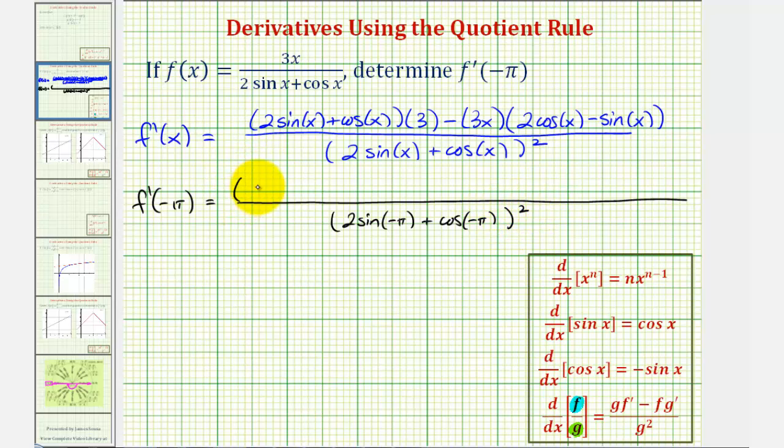The numerator is going to be two sine negative pi plus cosine negative pi times three, minus three times negative pi, or negative three pi, times two cosine negative pi minus sine negative pi.